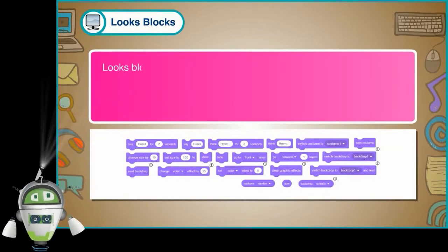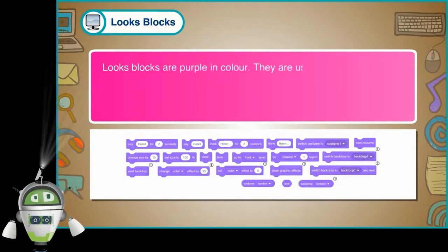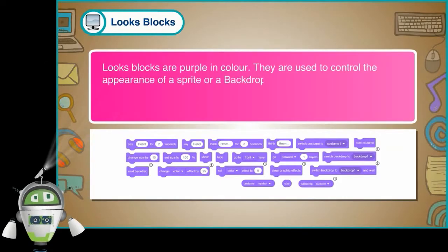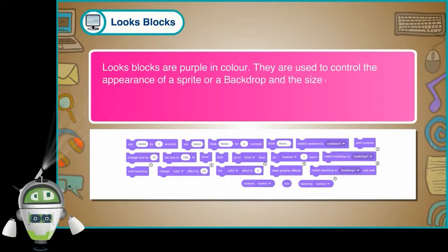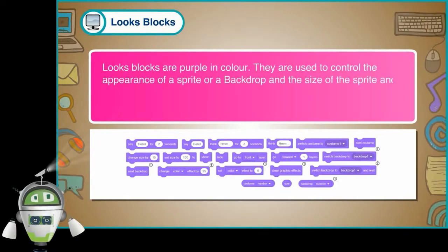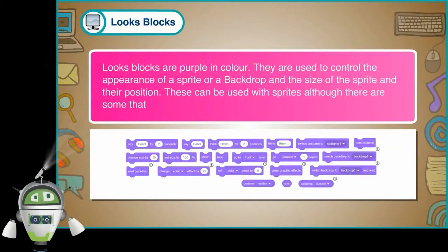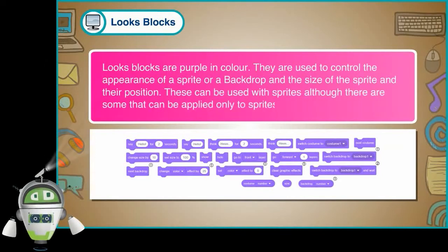Looks Blocks are purple in color. They are used to control the appearance of a sprite or a backdrop and the size of the sprite and their position. These can be used with sprites, although there are some that can be applied only to sprites.